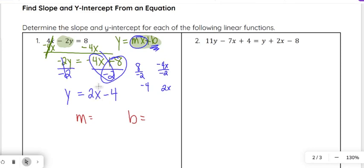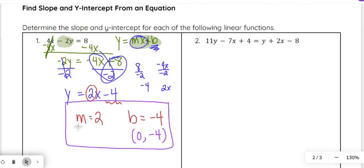Our m, our slope, is the number attached to or being multiplied by the x, so that would be 2 here. And -4, so it does include the sign in front of the constant, -4 is our b-value, our y-intercept. If you have to write it as an ordered pair, it will be (0, b), so (0, -4). That is our slope and our y-intercept.